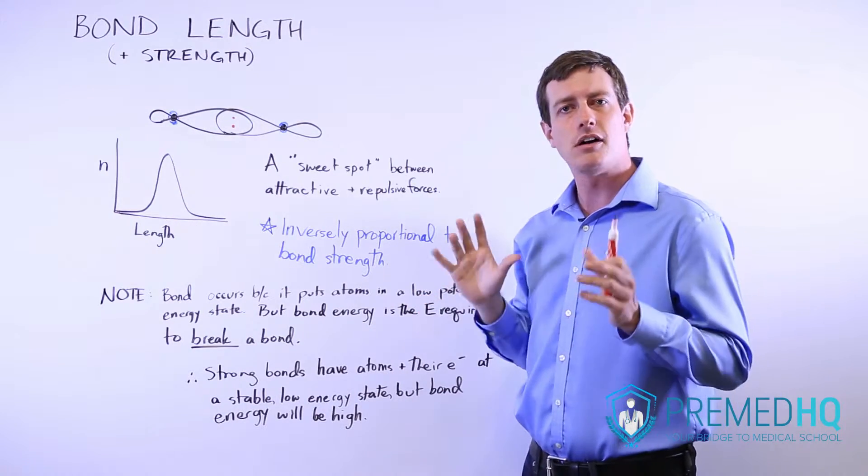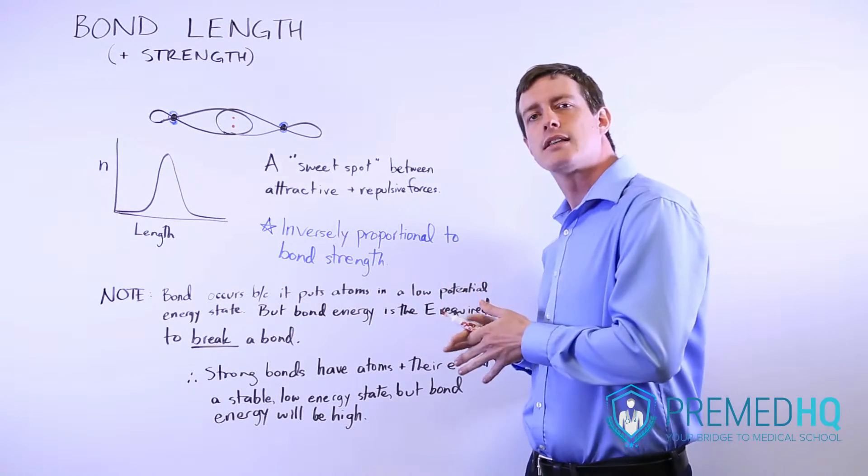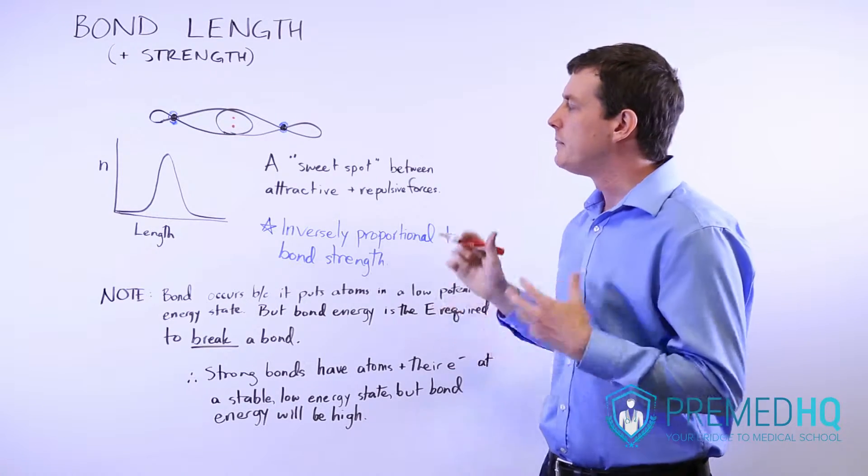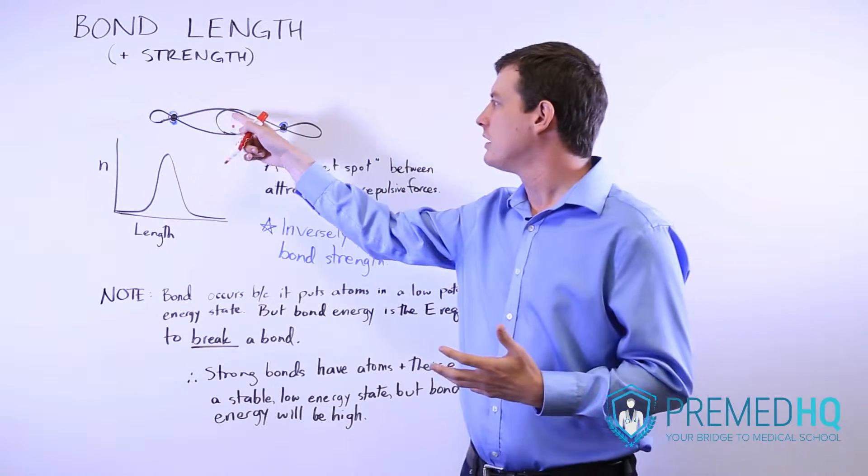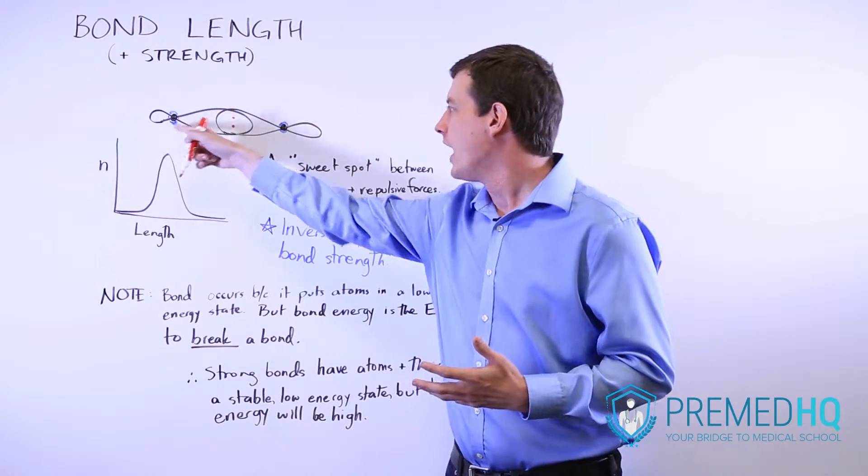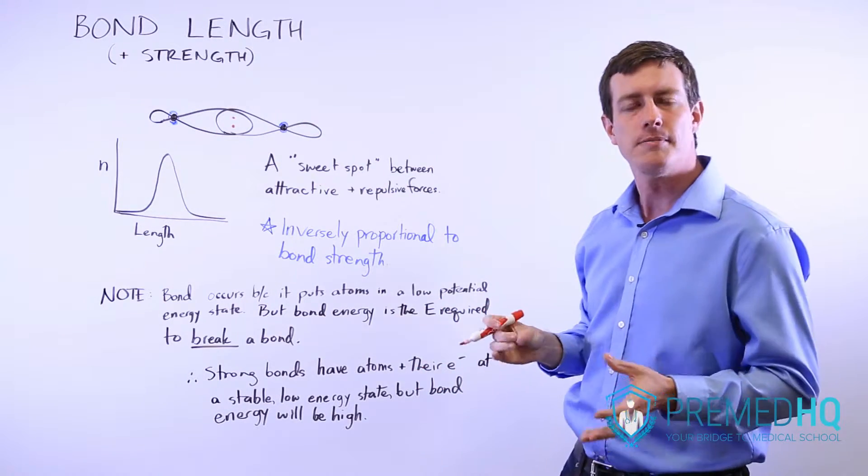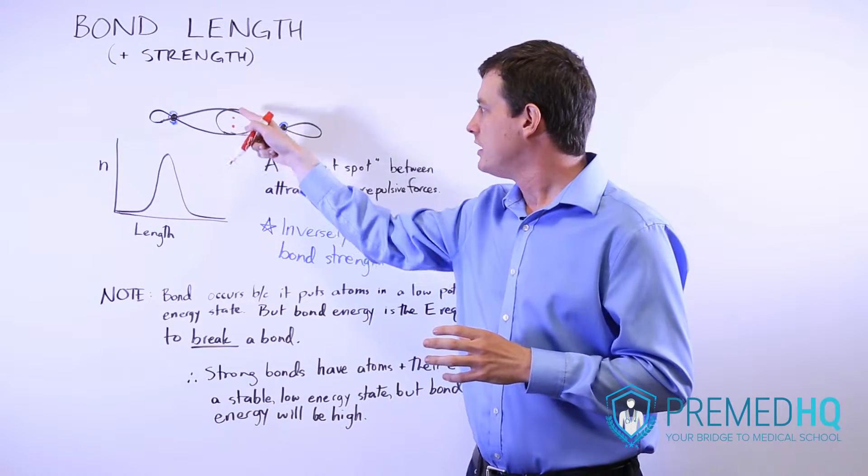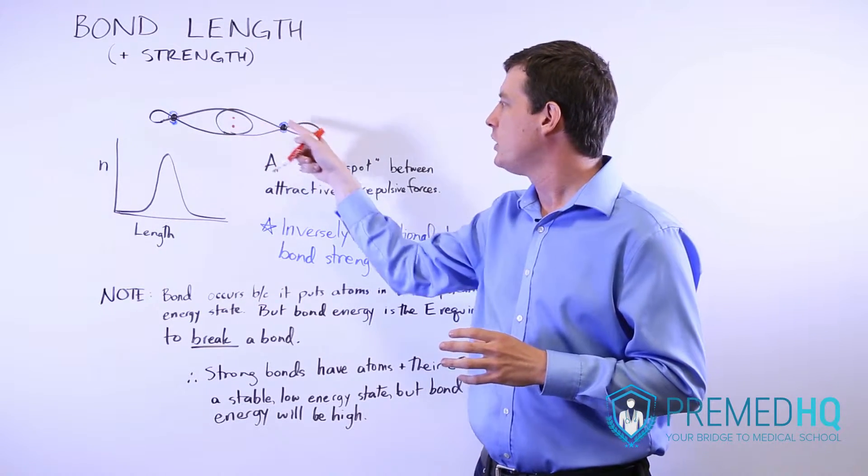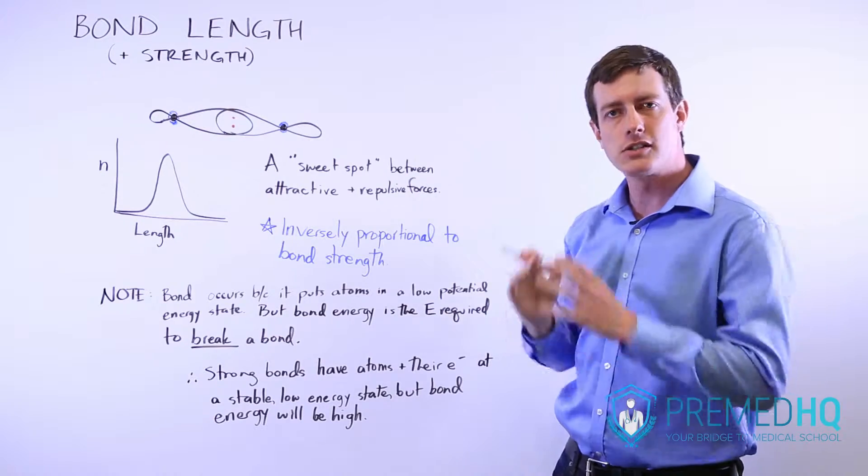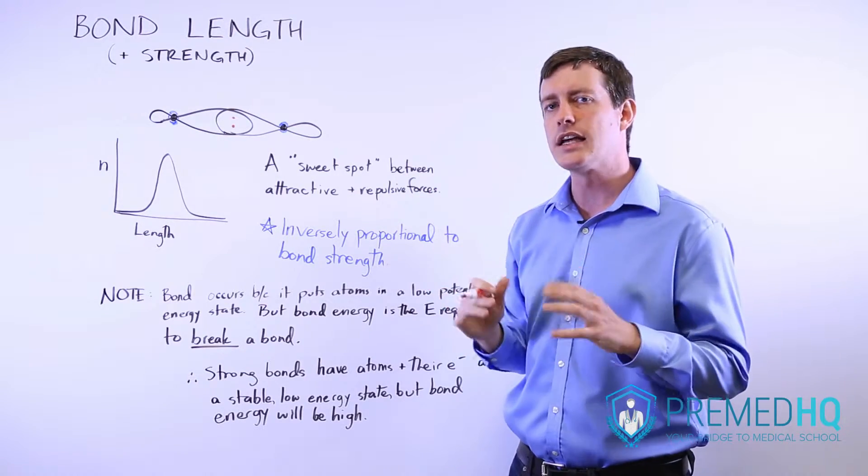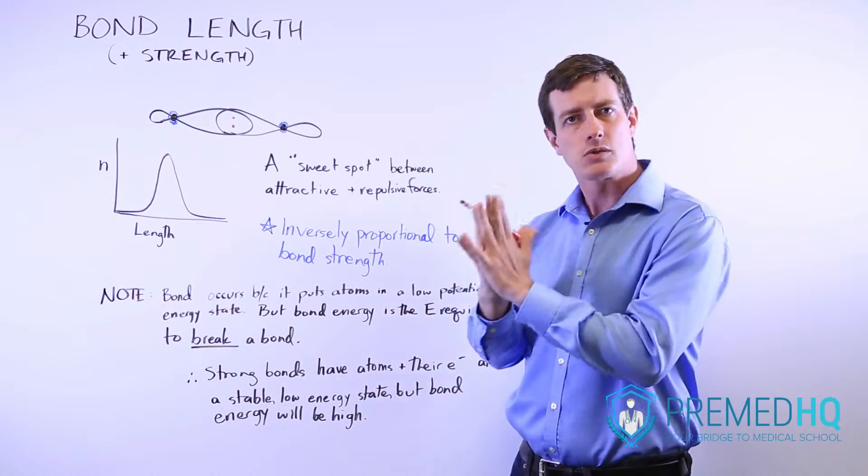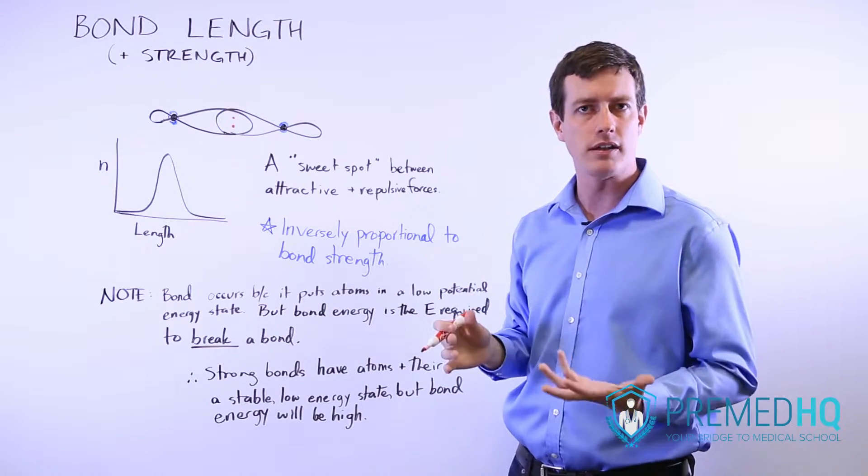That length is what's called the bond length, and that bond length is sort of a sweet spot between the attractive forces between the electrons in the bond and the positively charged nuclei, and the repulsive forces between these two electrons and between the nuclei themselves. Bonds oscillate a fair bit in their length, but they tend to settle into the sweet spot, which is known as the bond length.